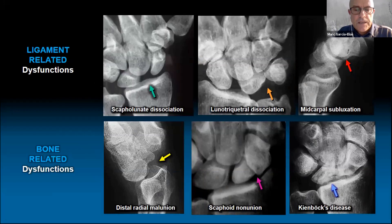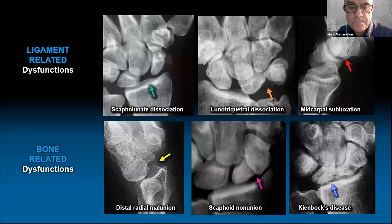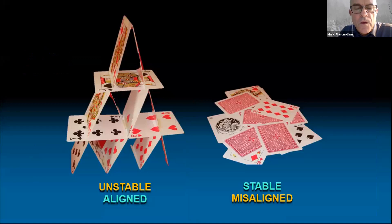Certainly, the term instability should not be used to name one specific condition, but to name every symptom characterized by pain, weakness, and loss of carpal alignment, whatever the cause. It's not a condition — whenever you say 'I have a case of carpal instability,' you are not saying enough. There are several problems with this view: ligament-related instabilities are not always misaligned, and there are so many things that didn't work fine.